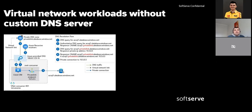We can extend this model to peered virtual networks associated with the same private endpoint. In this case, we add new virtual network links to the private DNS zones for all peered virtual networks. A single private DNS zone is required for this configuration — creating multiple zones with the same name for different virtual networks would require manual operations to merge DNS records, which works but is not a good approach.